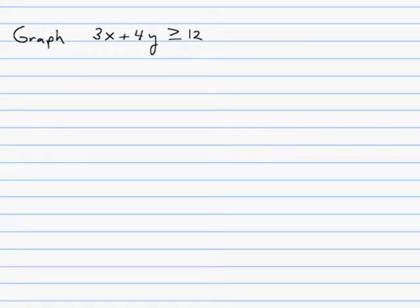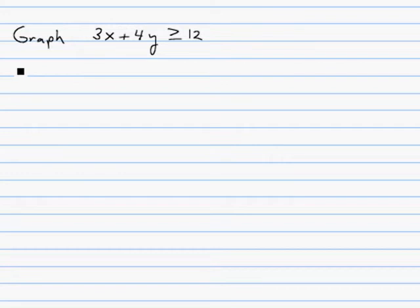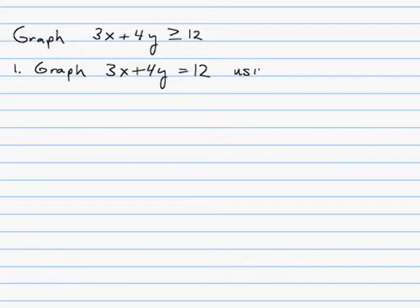Here we'll look at graphing linear inequalities. The first one we'll look at is the inequality 3x plus 4y is greater than or equal to 12. Notice that 3 and 4 both divide into 12 evenly. The easiest method is to first graph the line 3x plus 4y equals 12 using a solid line. We use a solid line because equality is allowed.